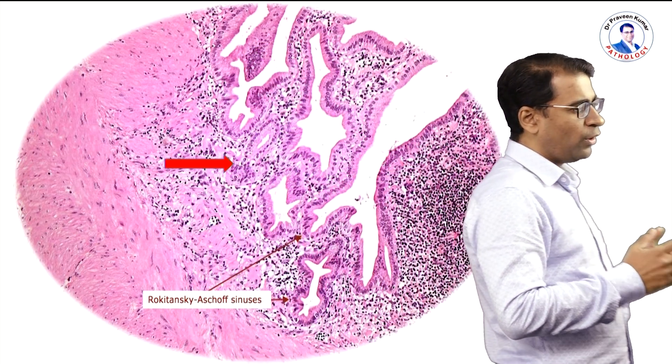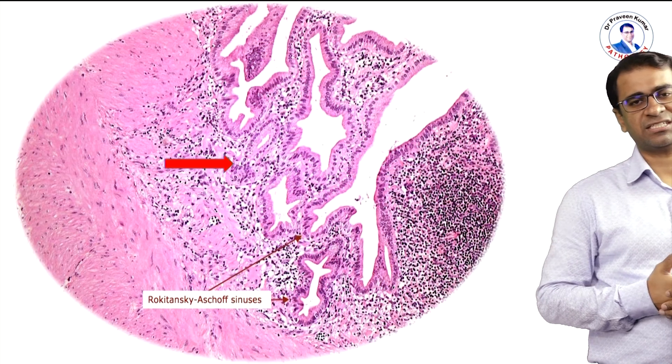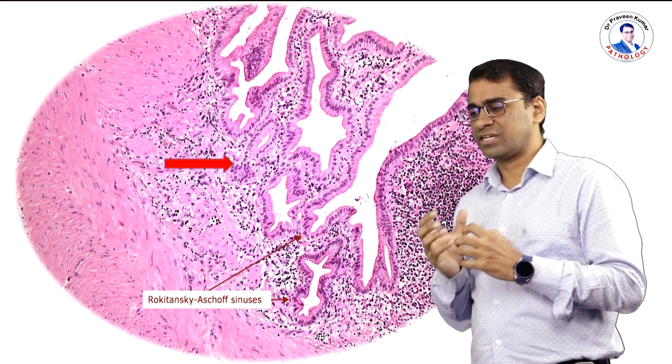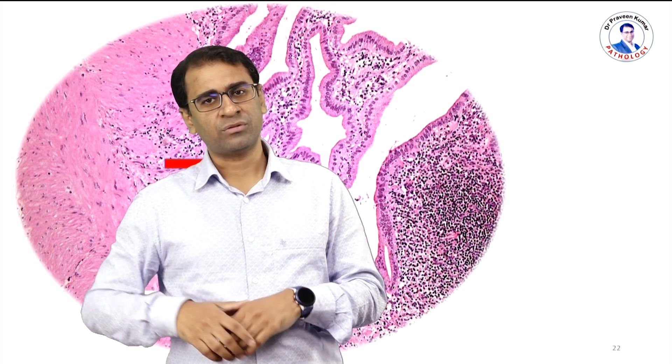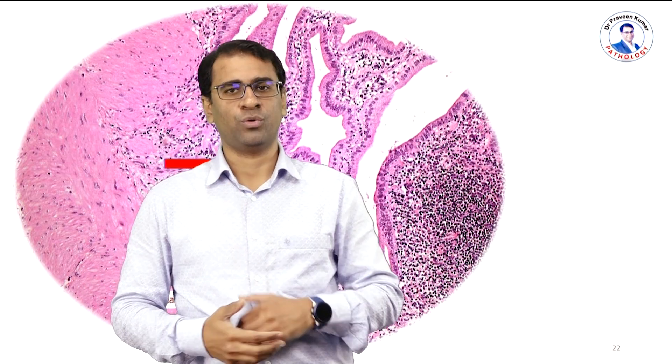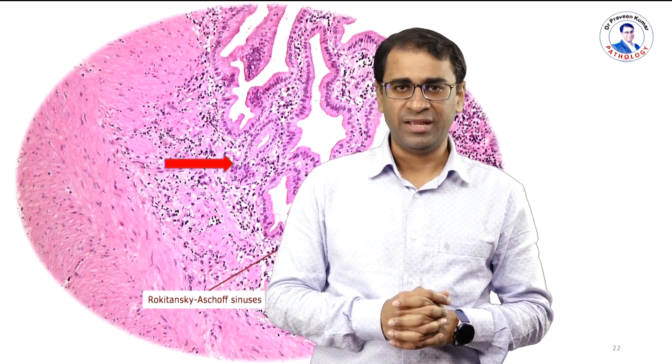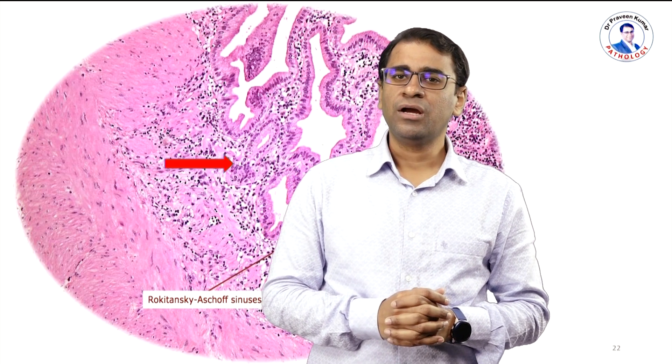Let us compare this to what happens in cholecystitis. In acute cholecystitis, it must show you neutrophil infiltration in the mucosa and submucosa. The clinical finding will be acute shearing pain in the upper right hypochondrium, which may also extend to the right shoulder. This is a very important pain finding in cholecystitis.